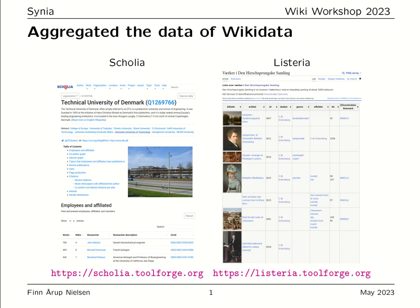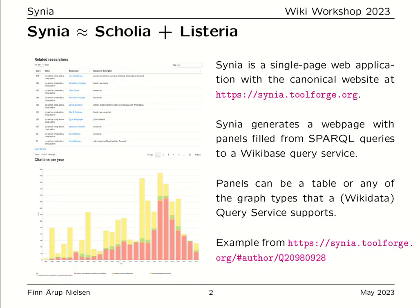Cynia is a kind of combination of Scolia and Listeria. It's a single-page web application hosted at the Cynia website on Toolforge. It generates a web page with panels filled with SPARQL queries to a Wikibase query service.